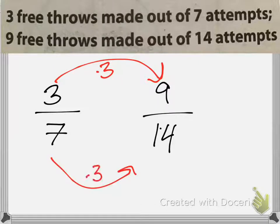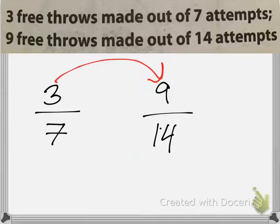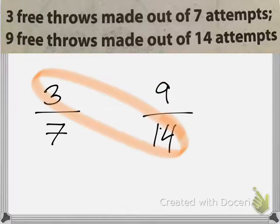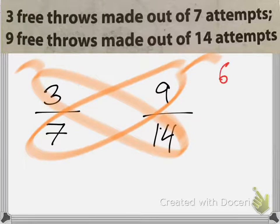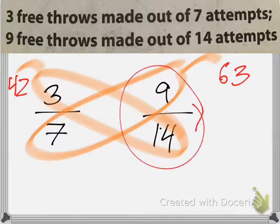So what happens if I multiply 7 times 3? Seven times 3 is 21. Are these two equivalent ratios? No, they are not — because this is over 14, and if they were equivalent, it would need to be over 21. Another way is butterfly math: 9 times 7 is 63, and 3 times 14 is 42. Not equivalent — and 9 free throws out of 14 was the better rate.